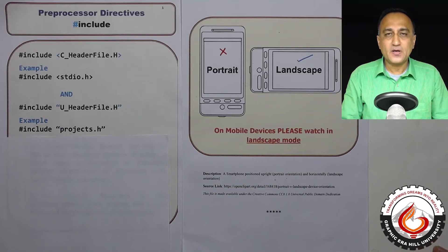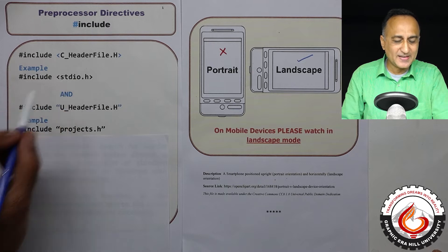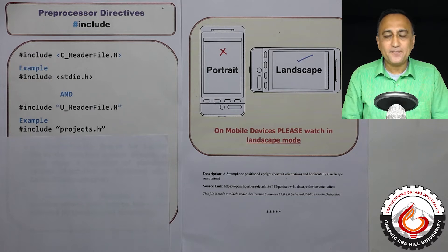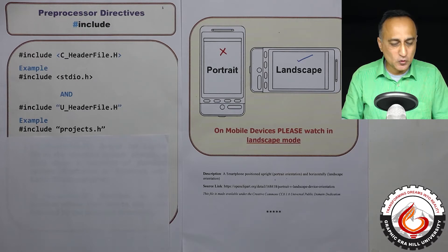In the first hello world program, if you remember, I had included a line called hash include stdio.h. This means we are including the header file. The header file contains global variable declarations and prototype declarations of functions like printf, scanf, square root, and so on.